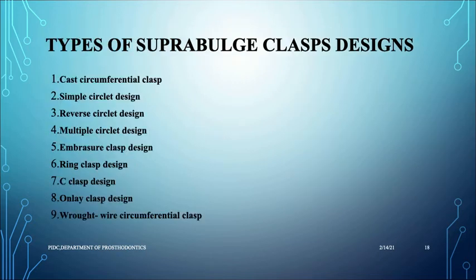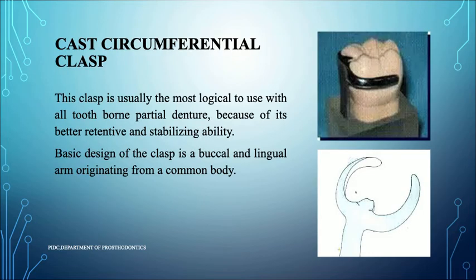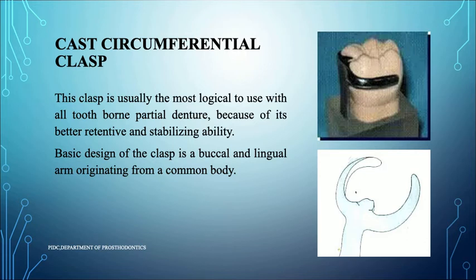There are several types of supra bulge clasps: cast circumferential, simple circulate, reverse circulate, multiple circulate, embrasure clasp, ring clasp, C clasp, onlay clasp design, and wrought wire circumferential clasp. The cast circumferential clasp is a C-shaped clasp that approaches occlusally. It is the most accepted and widely used clasp because it is more stabilizing and has more retention. Its basic design consists of a buccal and lingual arm originating from a common body.